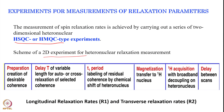Then we introduce a T1 period, which is for frequency encoding in the indirect dimension. Finally, we transfer our magnetization to the proton and detect on proton while decoupling the heteronuclei. There has to be a delay between each scan, and this delay should be about 5 times T1.